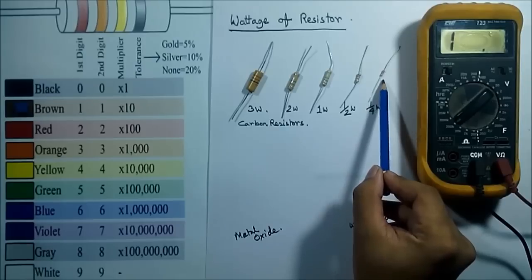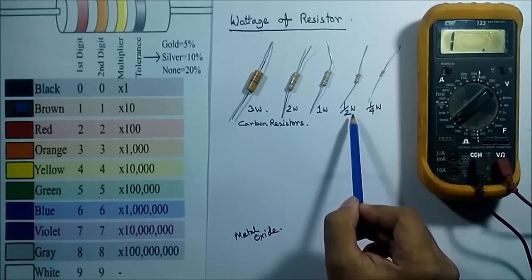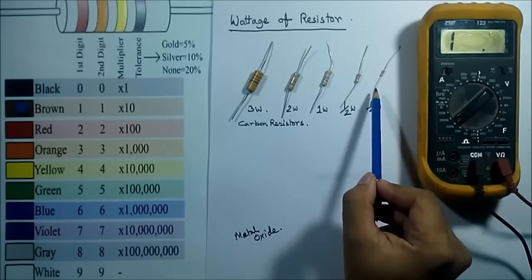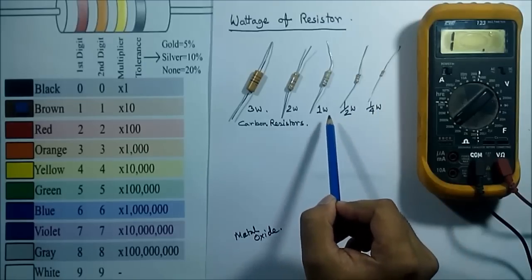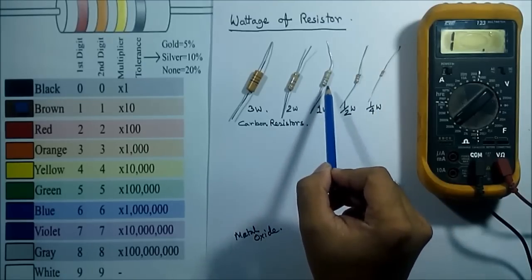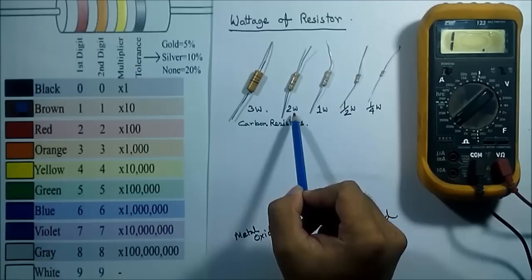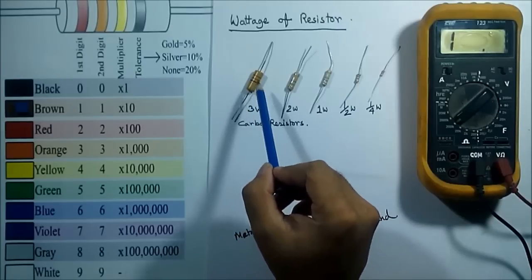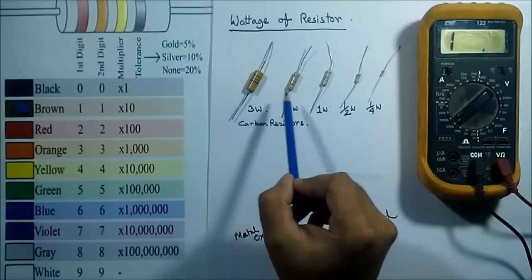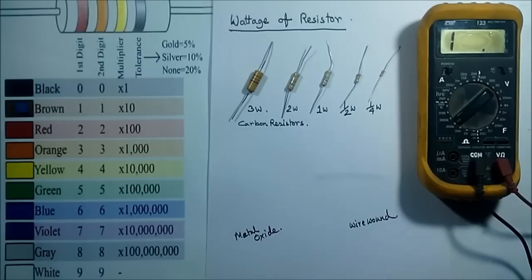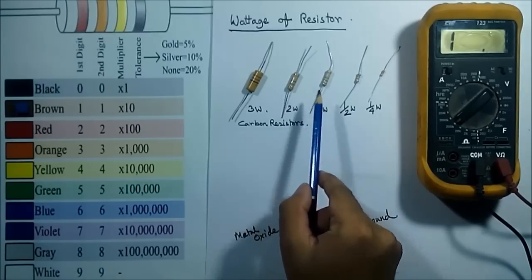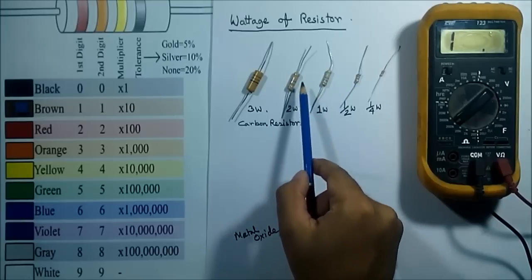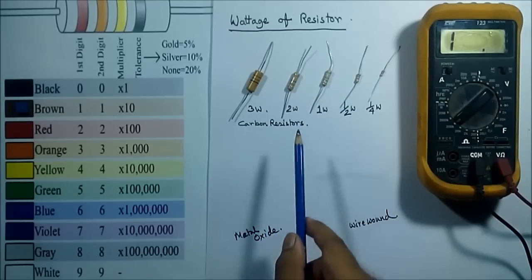As we can see, in 1/4 watt the size is small, but in half watt the size is greater. Again the volume or size increases in 1 watt, again in 2 watt the volume and size is increased, and in 3 watt also the size is increased from 2 watt. As the wattage increases, the size of the resistor also increases. The resistance value of these two resistors is the same — 100 ohm — measurable by color coding, but their wattages are different.